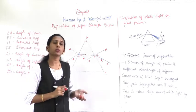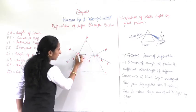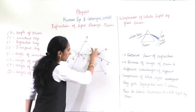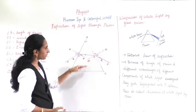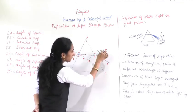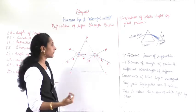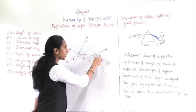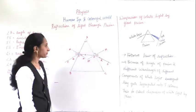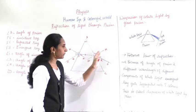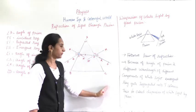Just as in a mirror the normal is always perpendicular to the surface, here also this is 90 degrees to the prism surface. I have drawn a normal to the AC surface. The angle between the normal and the emergent ray is called the angle of emergence. So we have: angle of incidence, angle of refraction, and angle of emergence. NN-dash and MM-dash are normals to the two sides of the prism.